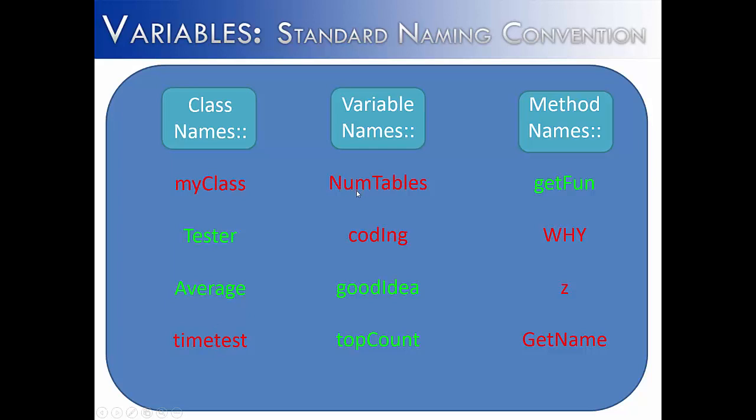Over here in variable names, we have num tables. Variables should always start with lowercase letters. The t in tables is fine, but the n in num should be lowercase. Coding is incorrect because it has a capital I right here in coding. And if you remember from the camel case example, the only thing that should be camel case are new words. So tables in numTables is a new word. The ing in coding is not a new word. So goodIdea works just fine, and topCount is also okay.